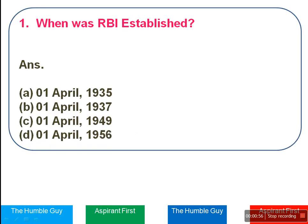First question. In this, we have to go through the Economic Survey and the budget. Every day we will cover all topics in different videos. First question is: when was RBI established? The right answer is RBI was established on 1st April 1935.